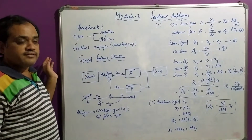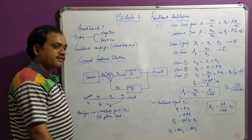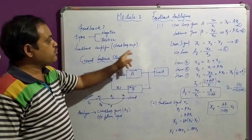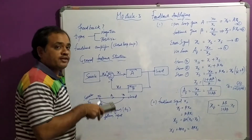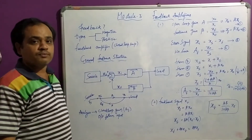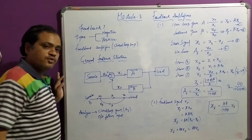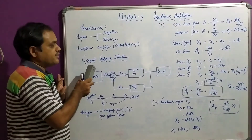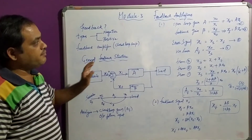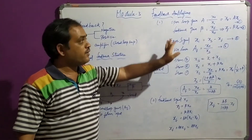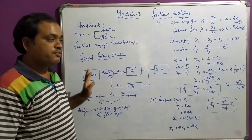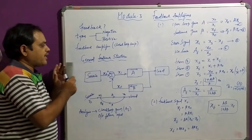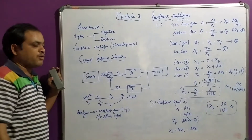If you connect an amplifier circuit and feedback is given, such amplifiers are called feedback amplifiers. Sometimes they are also called closed loop amplifiers, because as the output is connected to the input it forms a closed loop. With this small basic introduction, we will discuss the general feedback structure. In this module's first part, we are going to discuss feedback amplifiers entirely using negative feedback only.